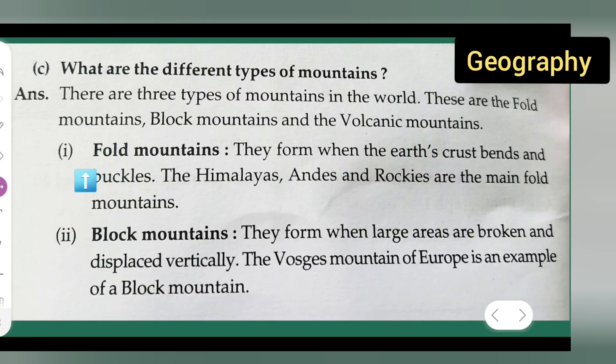Now, let us see the first mountain. First is the fold mountains. They form when the earth's crust bends and buckles. The Himalayas, Andes and Rockies are the main fold mountains.